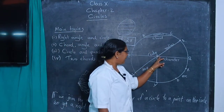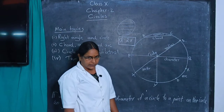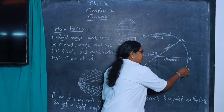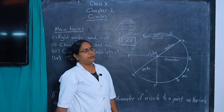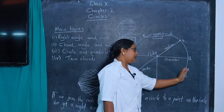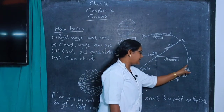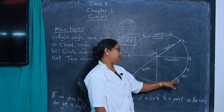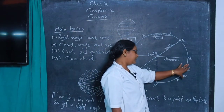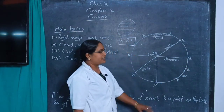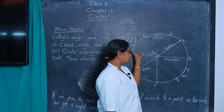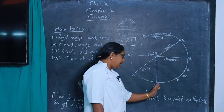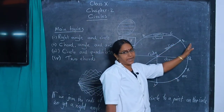I mark two points D and E on the circle. The part of the circle between those two points is called an arc. A small arc less than 180 degrees is called a minor arc. The remaining arc is called the major arc.